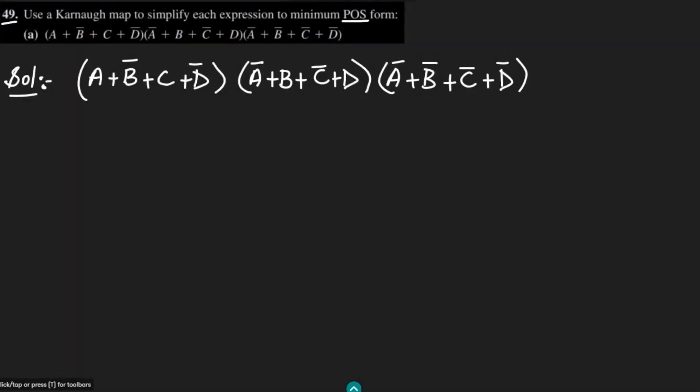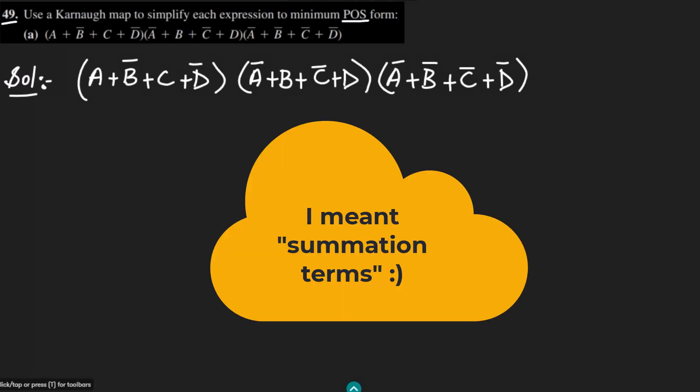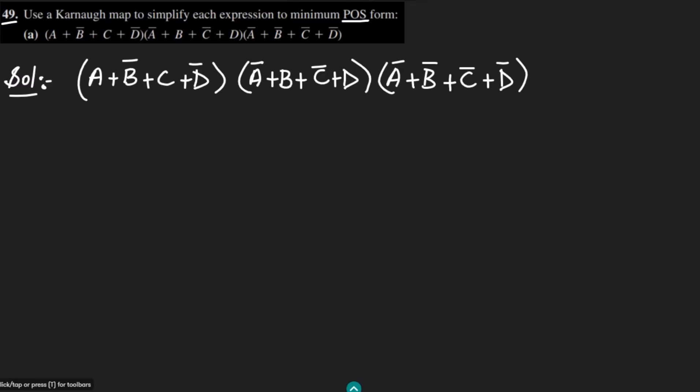The binary values should fulfill each of the product terms here equal to 0. For the first term, A will remain 0, B complement will be 1, C will be 0 and D complement will also be 1. For the second term here I will have 1, 0, 1, 0. For the last term all the terms are complemented, so here I have to write these four ones.